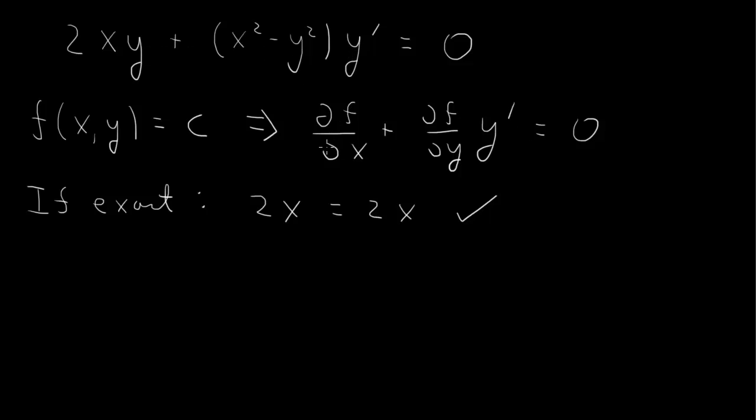So it's in this form, df/dx plus df/dy y prime equals zero. If it's an exact equation, then we can find a solution by integrating. So df/dx then is 2xy. So we know that df/dx equals 2 times xy.